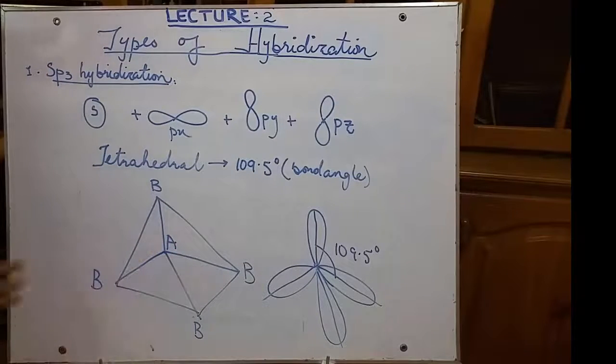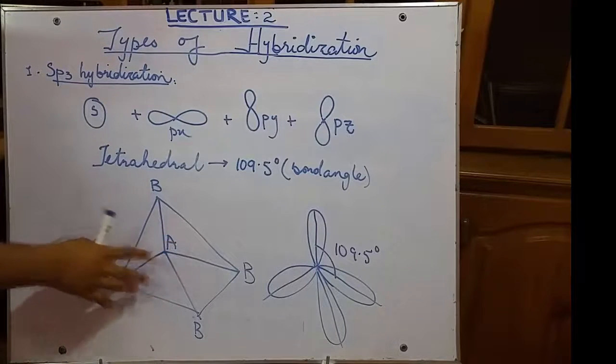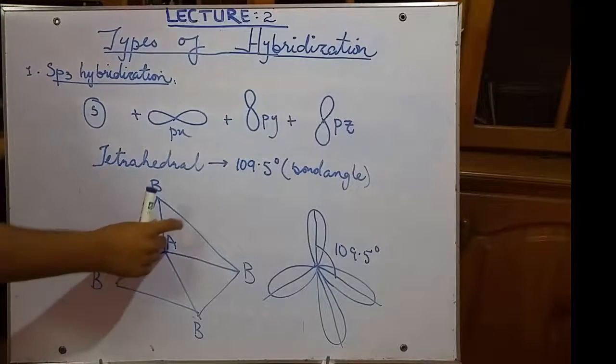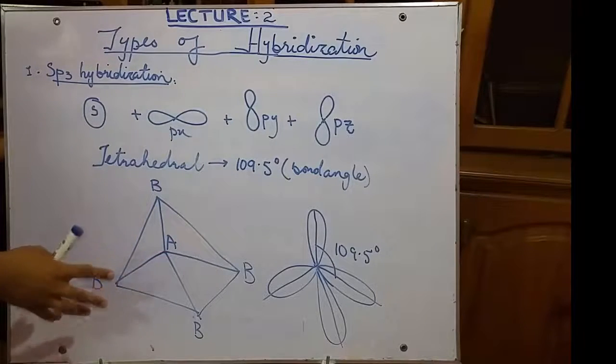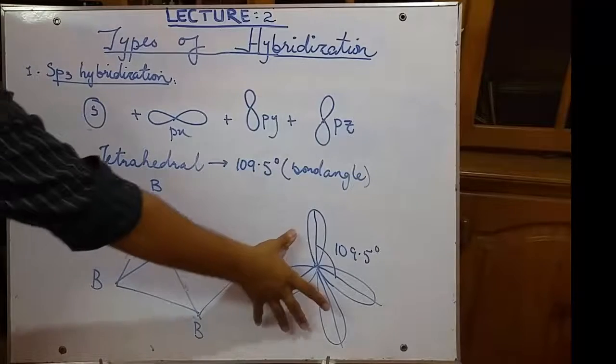We will be understanding what is the central atom and how to identify the central atom. For the time being, let's consider A is the central atom and all these are different atoms that are being attached by sp3 hybridization. So, you can form this tetrahedral structure in covalent bond. Then you can trace it out to make the hybrid orbital theory.